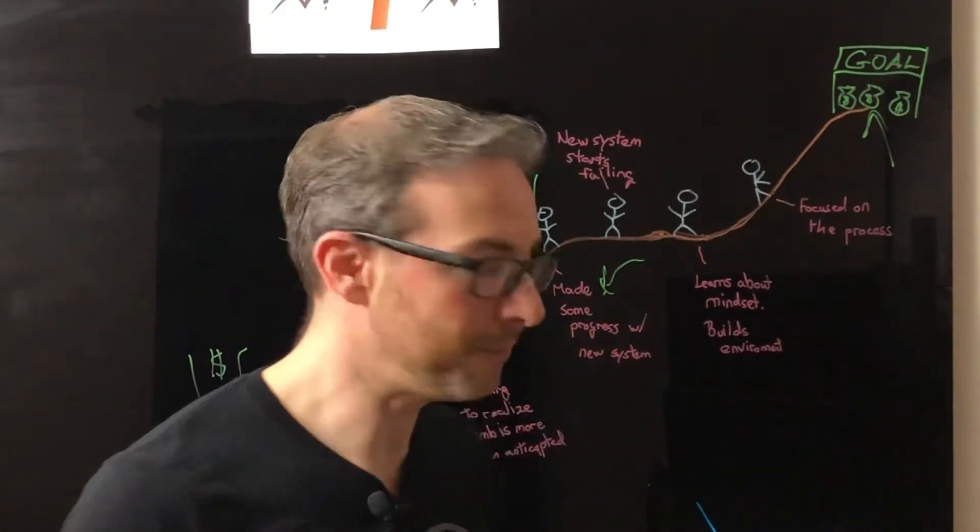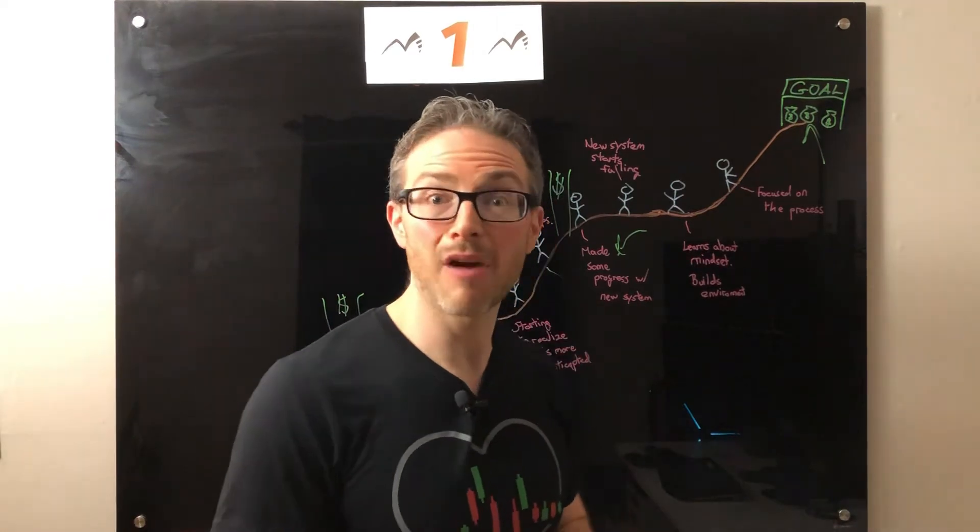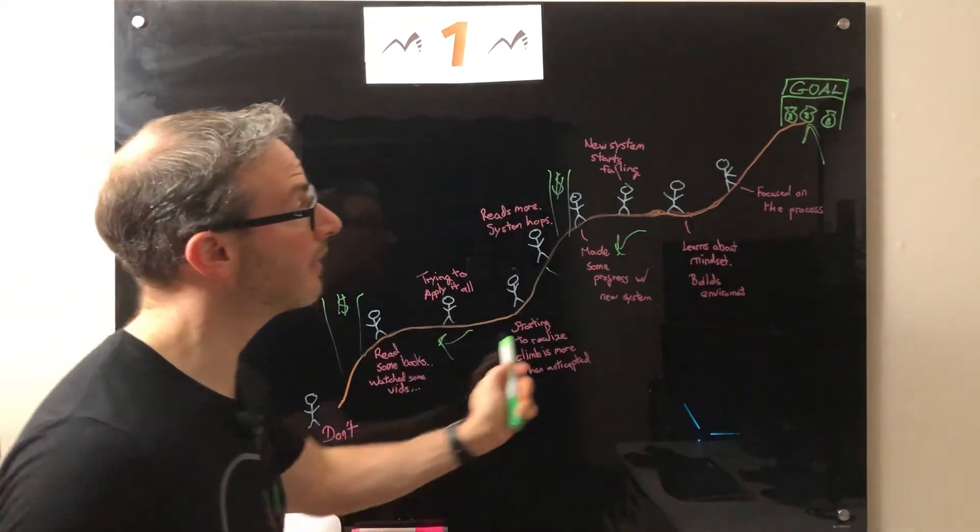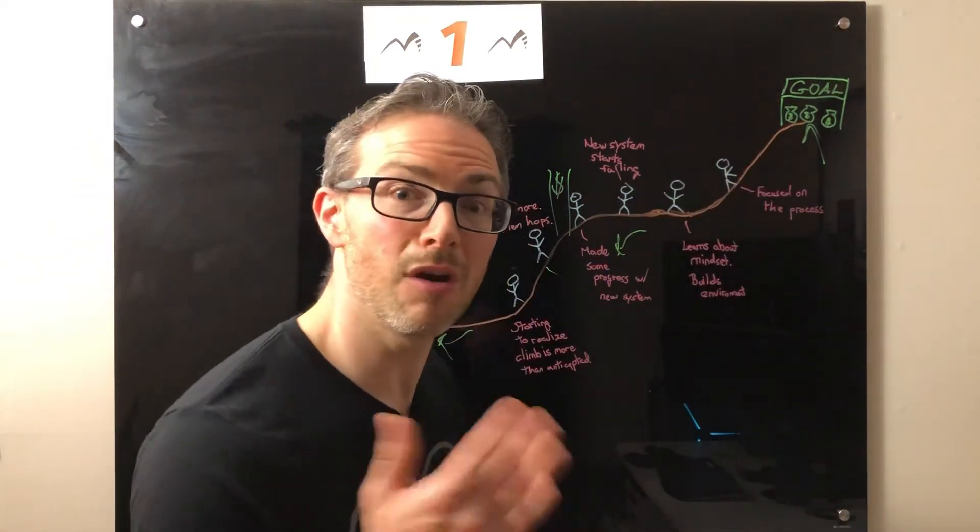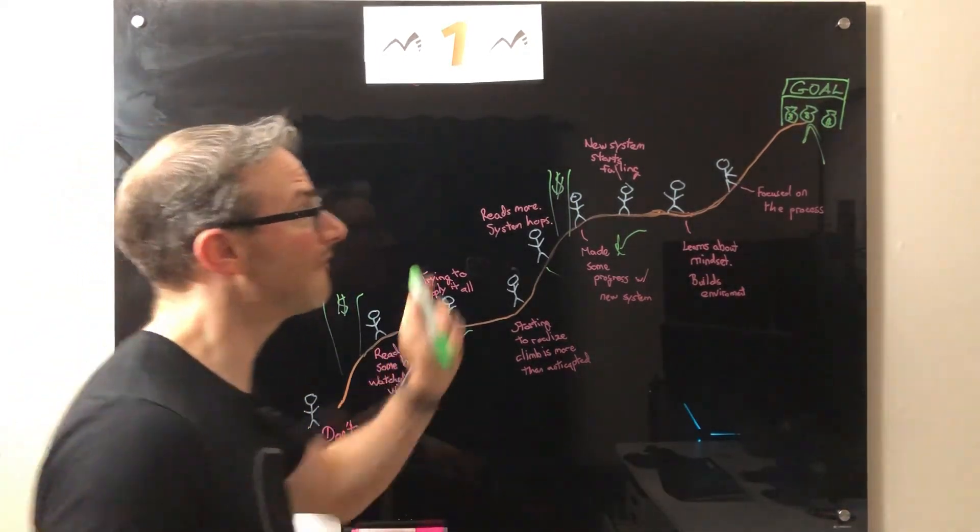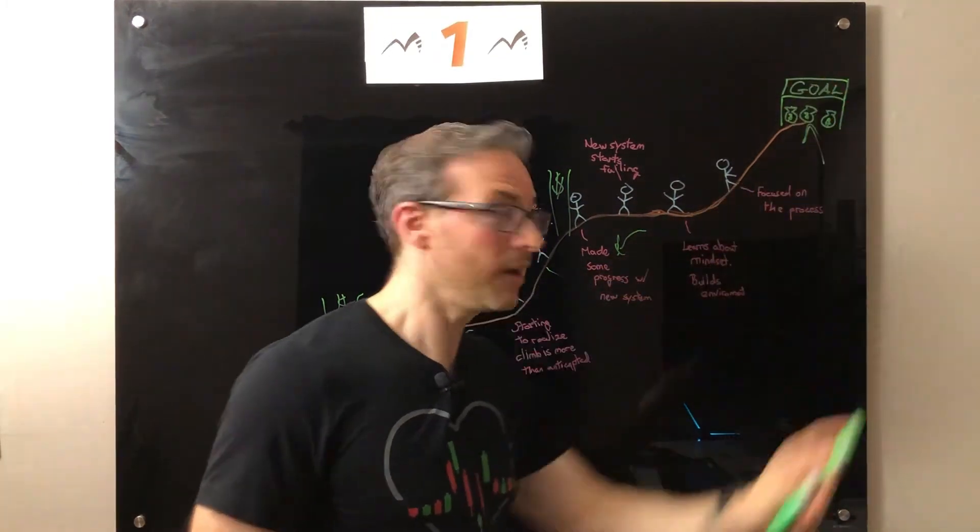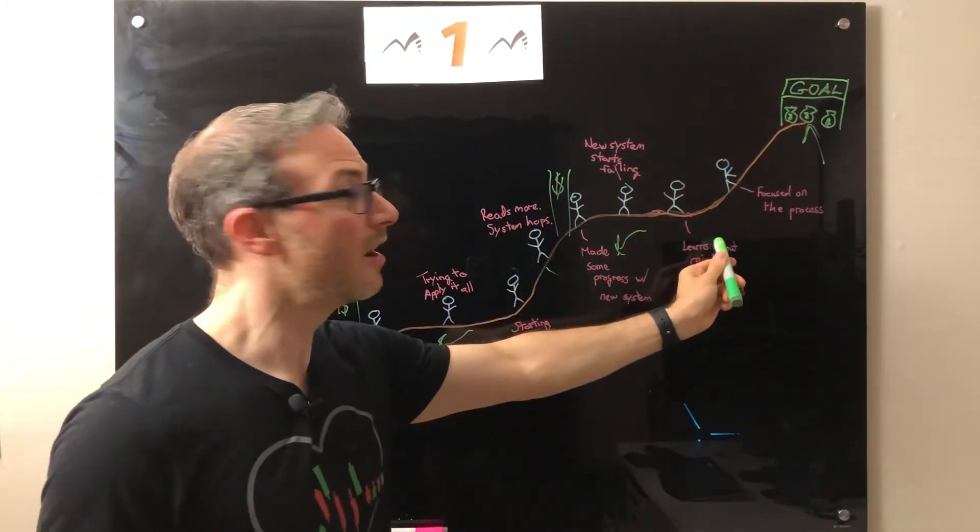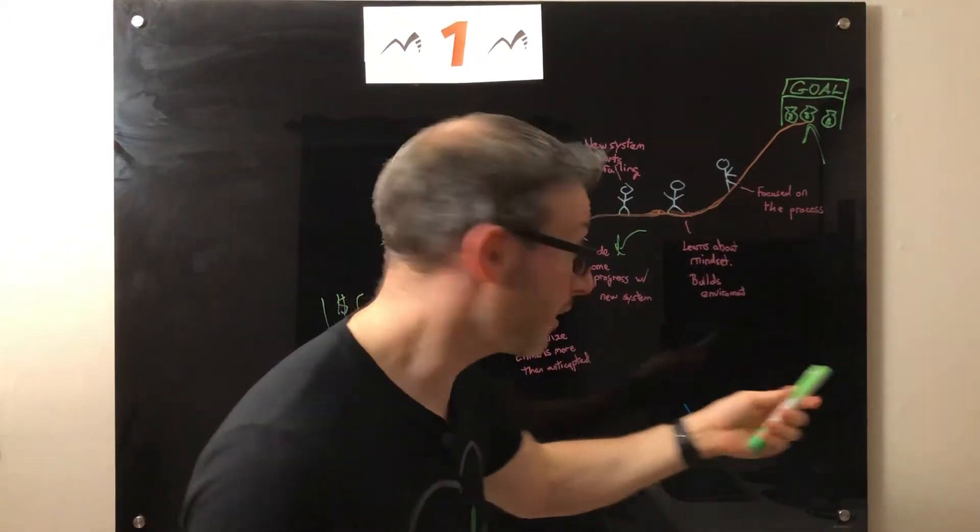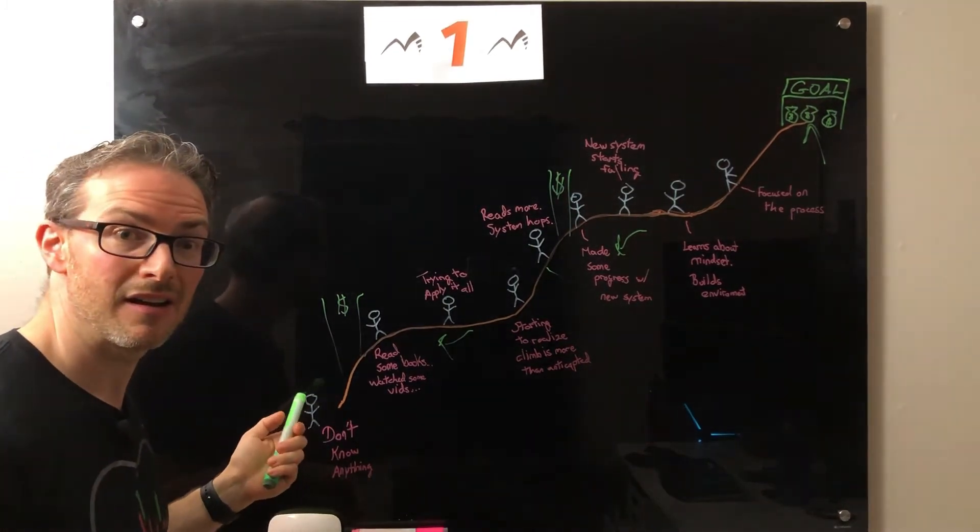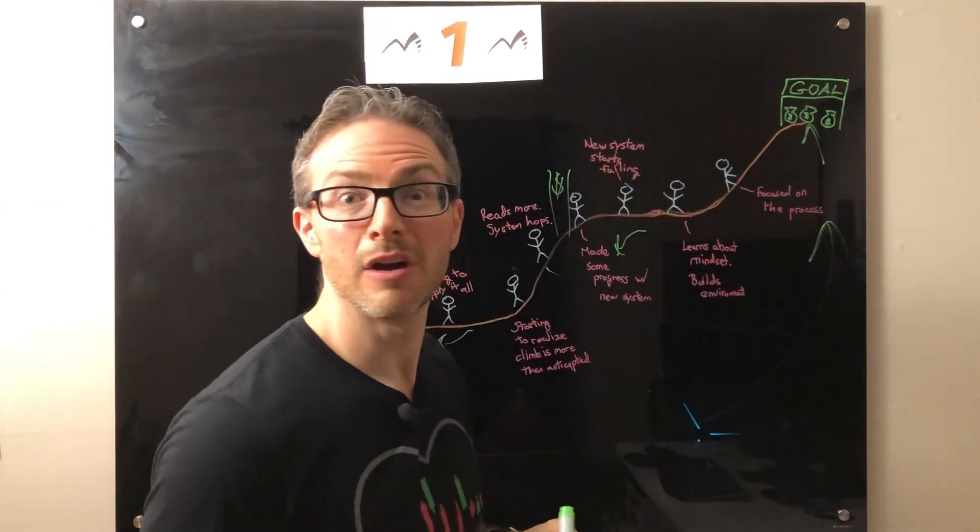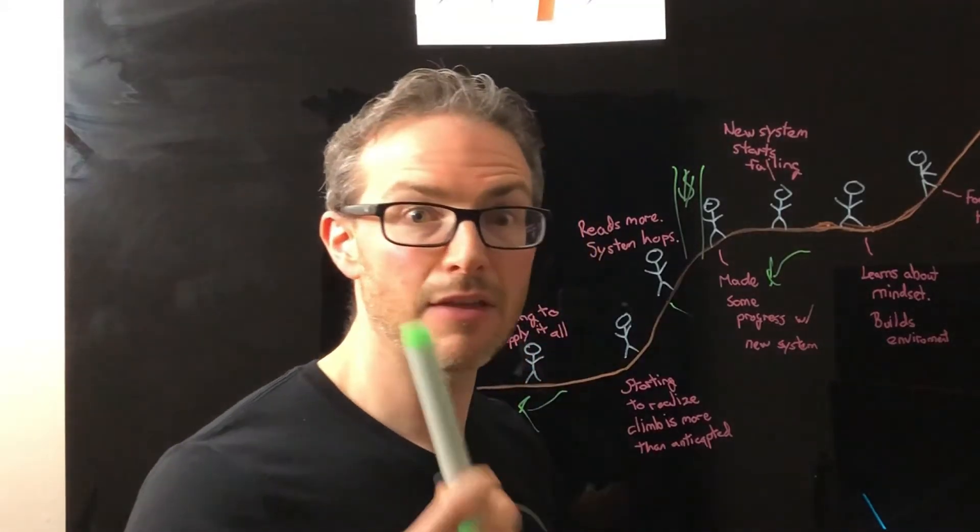This is the problem that traders face. They start out here, they have no idea of the journey involved. But that's not you anymore. You know that there's nine steps, ten steps really from starting to here and finally getting to that goal. If you start out with mindset in mind, if you start out building your environment from back here, then that's going to shortcut your path to that goal. That's what I want to help you with.